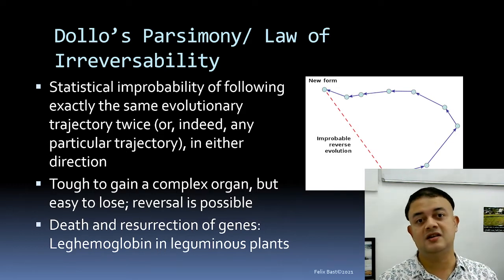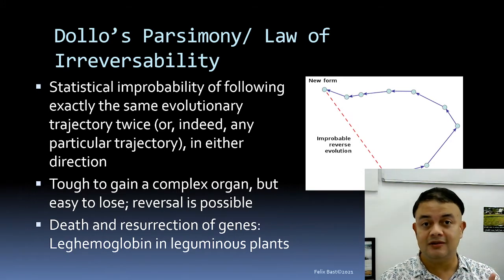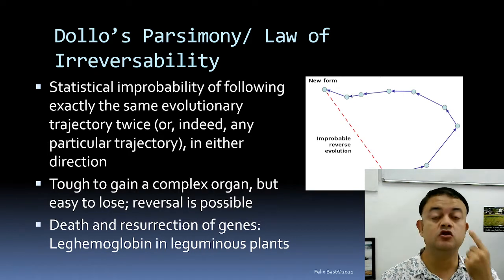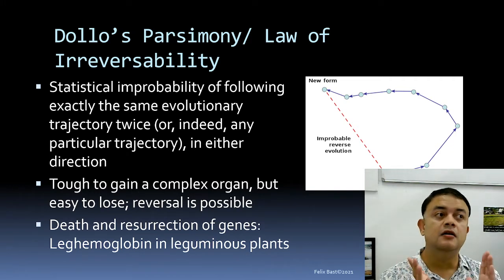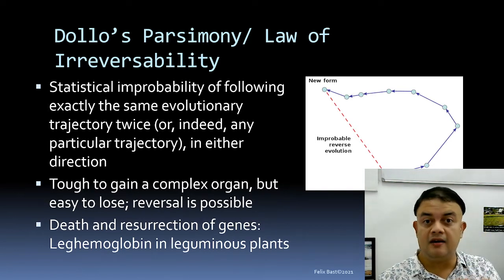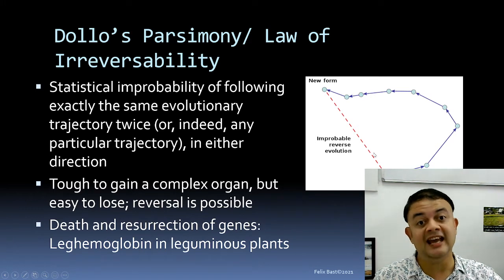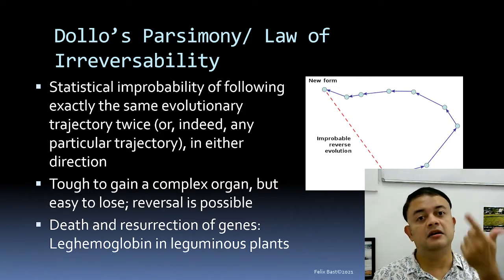It is easy to lose a complex organ though — a single point mutation can invalidate such structures, as seen in children born blind due to genetic abnormalities. Reversal is possible: if a structure is lost by a single point mutation, a back mutation can restore it. But gaining a complex trait through evolution requires enormous improbable steps. Just as it takes great effort to build a skyscraper but only seconds to destroy it, losing evolutionary complexity is far easier than gaining it.